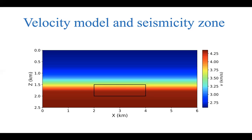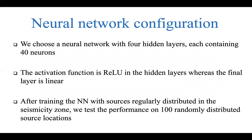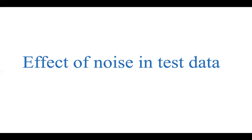Once trained, we use 100 randomly distributed sources to predict their locations. We choose a neural network with four hidden layers, each containing 40 neurons, with a rectified linear unit activation function in the hidden layers and a linear final layer. The first parameter we study is the effect of noise in the test data, which may arise due to errors in picking.